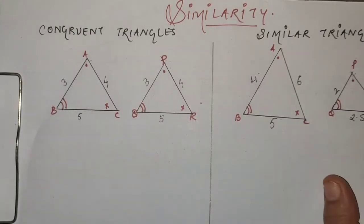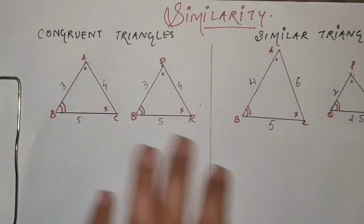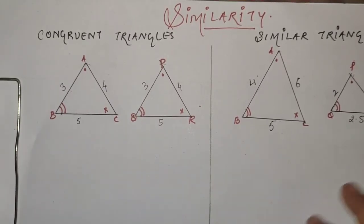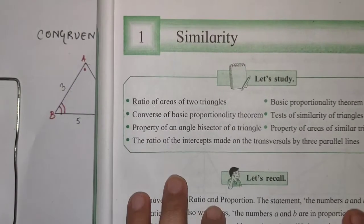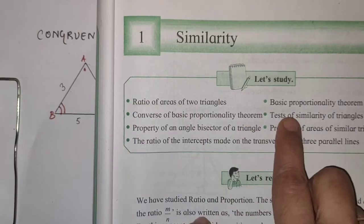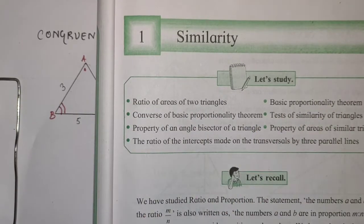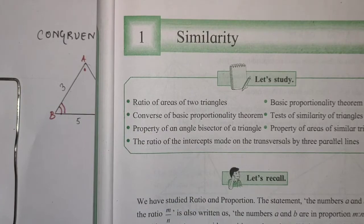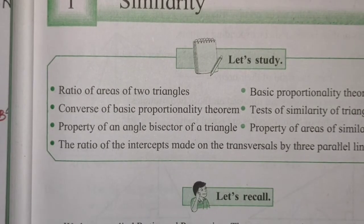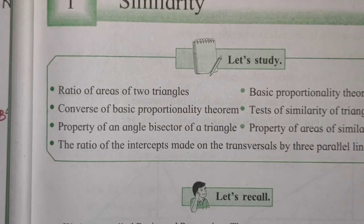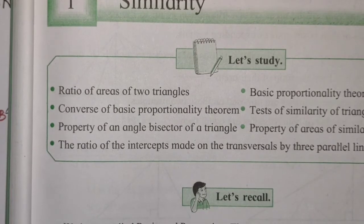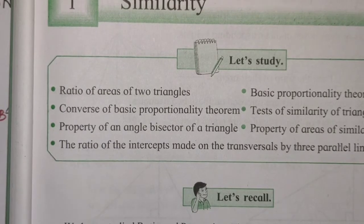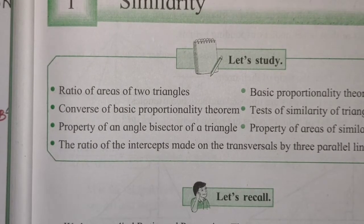Hello everyone, welcome to my class. Students, today we will study the first chapter - similarity of mathematics part 2, that is geometry. In this chapter we have to cover: ratios of areas of two triangles, the theorem BPT (basic proportionality theorem), converse of basic proportionality theorem, areas of similar triangles, angle bisector theorem, and ratio of intercepts made by three parallel lines. But today in this video we will concentrate on ratios of areas of two triangles, which is very important.